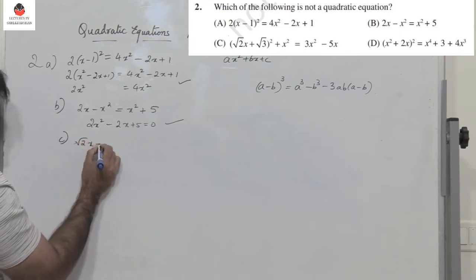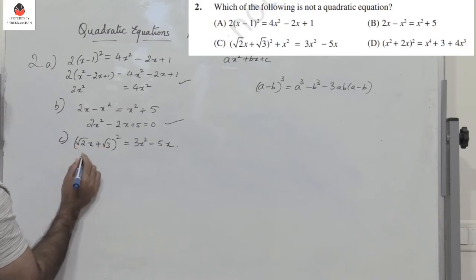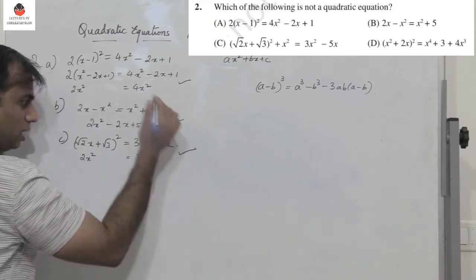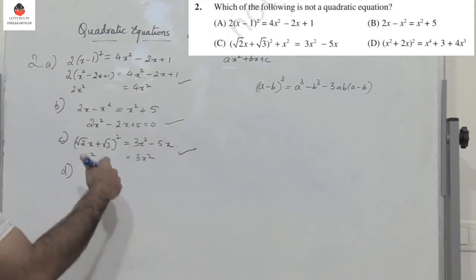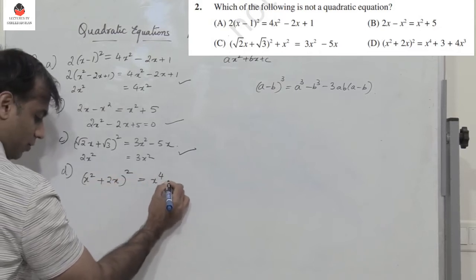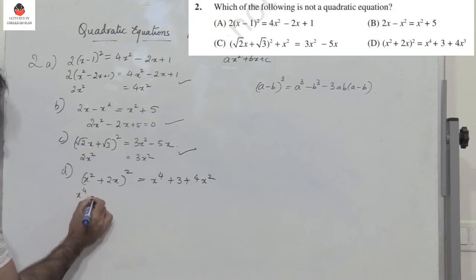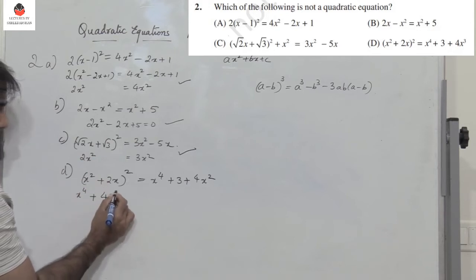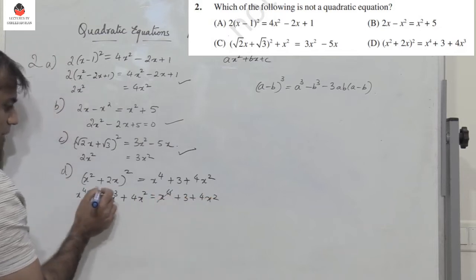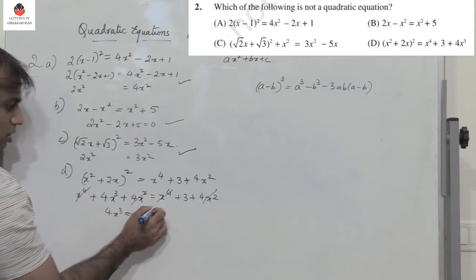Option C: root 2x plus root 3, the whole square equals 3x squared minus 5x. Squaring gives 2x squared on the left and 3x squared on the right, leaving x squared — another quadratic equation. Option D: x squared plus 2x, the whole square equals x to the power 4 plus 3 plus 4x squared. Expanding the left side gives x to the power 4 plus 4x cubed plus 4x squared. After x to the power 4 and 4x squared cancel, you are left with 4x cubed equals 3, which is not a quadratic equation. So the right option is D.